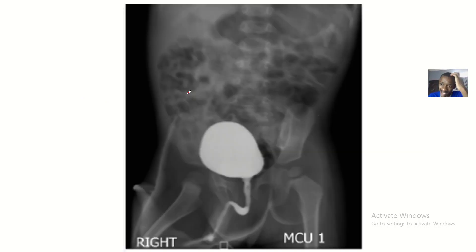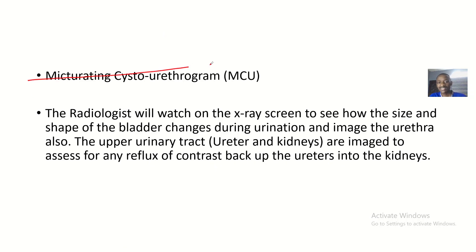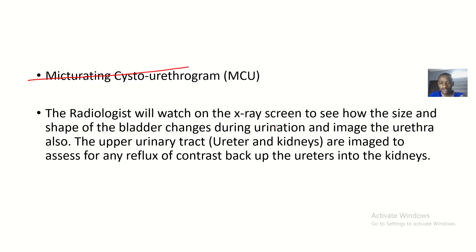So this is basically studying the ureter from the bladder. In a micturating cystourethrogram, the radiologist will watch on the x-ray screen to see how the size and shape of the bladder changes during urination. You also image the ureter. So people in this field know that if the bladder is moving a certain way it's normal, and if it's moving differently then there's a problem. This division of x-ray will help you study the ureter.